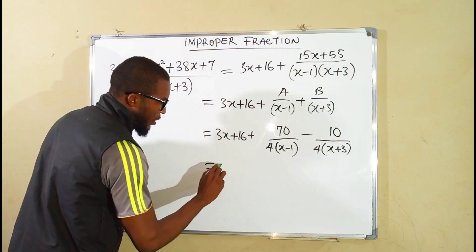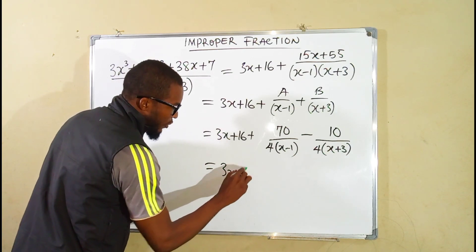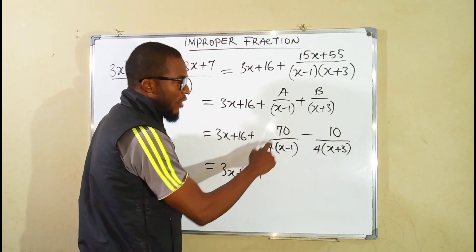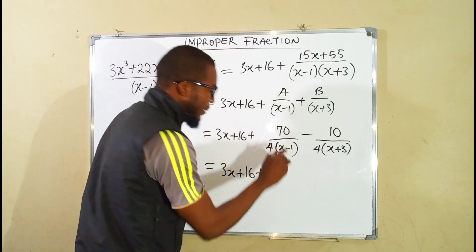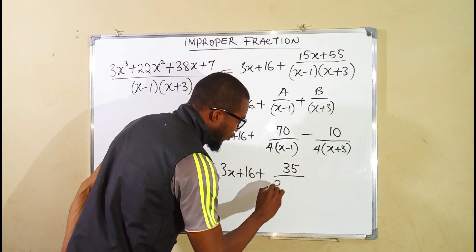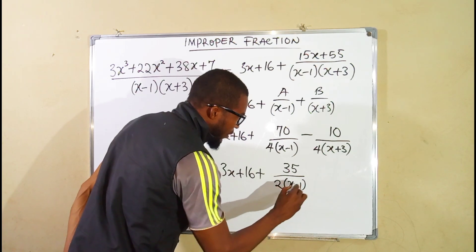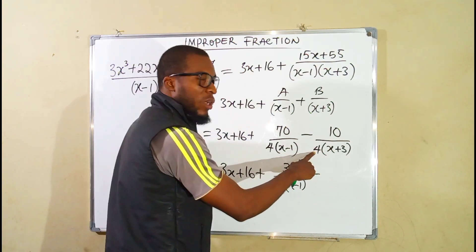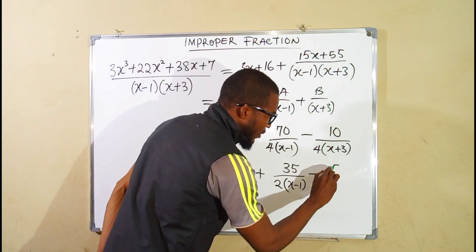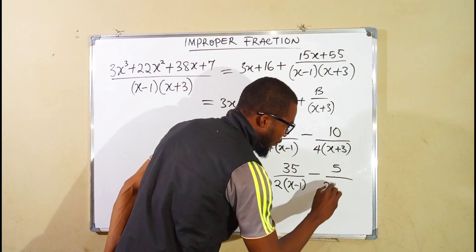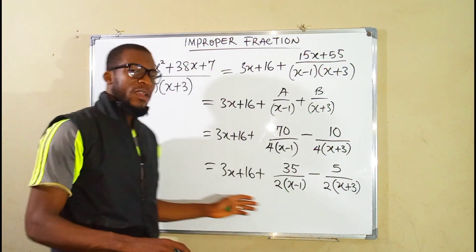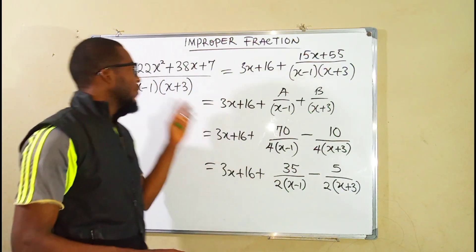This can be reduced to 3x plus 16 plus, 2 can go into 70 35 times and 2 can go into 4 2 times. So we have 35 over 2 times x minus 1. And 2 can go into 10 5 times. So we have 5 over 2 multiplied by x plus 3. And hence these are our partial fractions of this compound fraction.